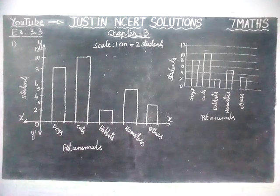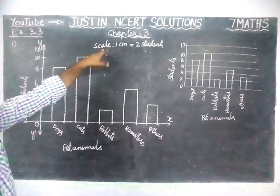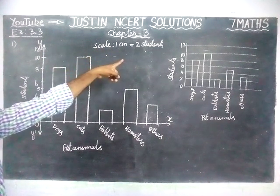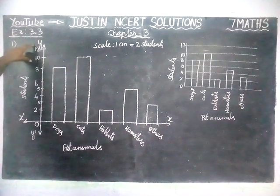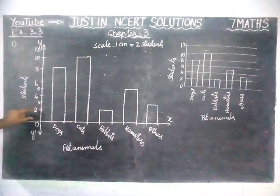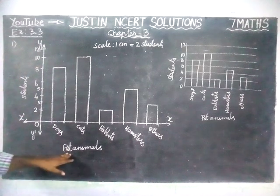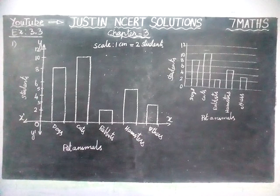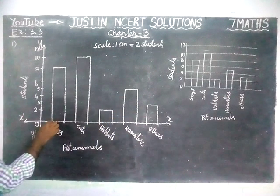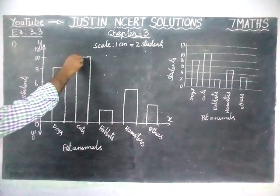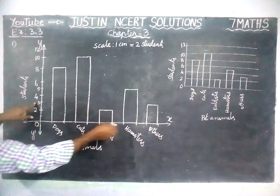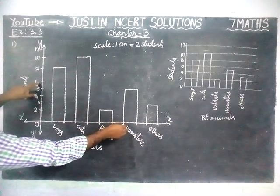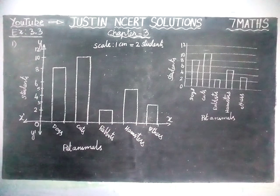So we have completed the bar graph. To recap: scale equals 1 centimeter equals 2 students on the y-axis. We have written 2, 4, 6, 8, 10, and 12. In the x-axis, the pet animals are dogs, cats, rabbits, hamsters, and others. The data drawn is: dogs 8 students, cats 10 students, rabbits 2 students, hamsters 5 students, and others 3 students. We have completed the diagram.